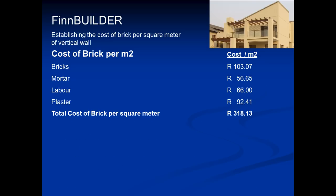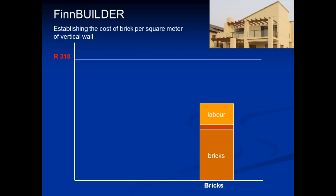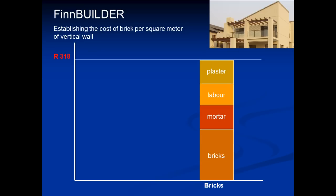Add all these costs up and arrive at a total cost of 318 Rand. To summarize: here we have the cost of bricks, next the cost of mortar to lay the bricks, then labour costs, and then the cost of plaster.